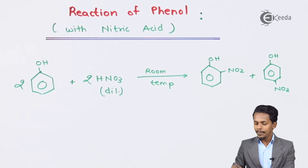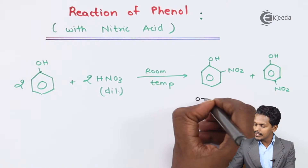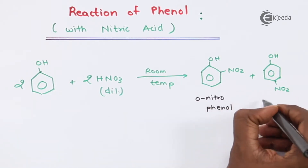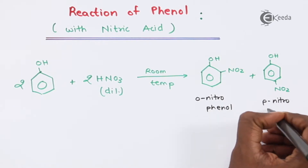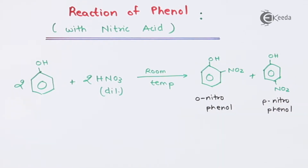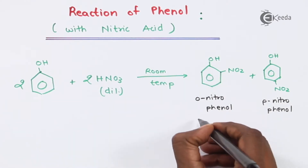The two products obtained are: ortho-nitrophenol (O-nitrophenol) and para-nitrophenol (P-nitrophenol). It has been found that the ortho product is the major product.